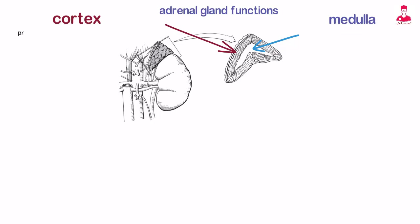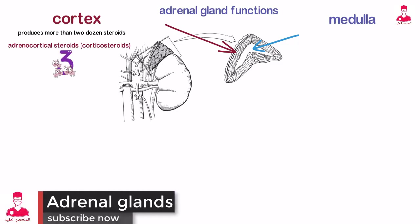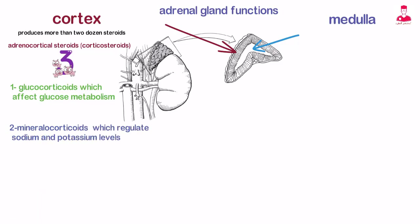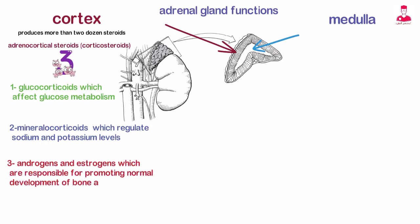The adrenal cortex produces more than two dozen steroids, collectively called adrenocortical steroids or corticosteroids. These are broken into three main categories: glucocorticoids, which affect glucose metabolism; mineralocorticoids, which regulate sodium and potassium levels; and androgens and estrogens, which are responsible for promoting normal development of bone and reproductive organs.